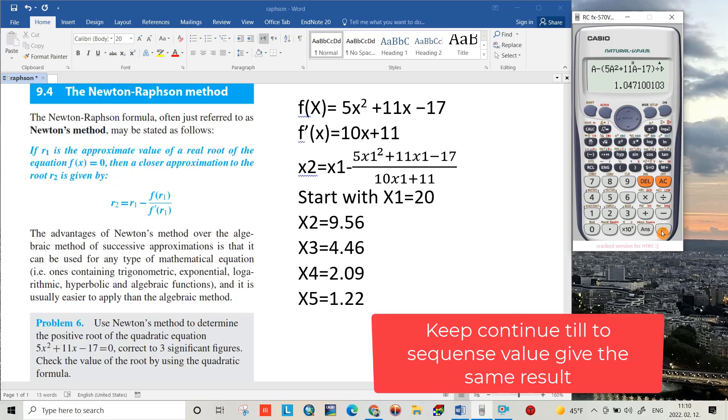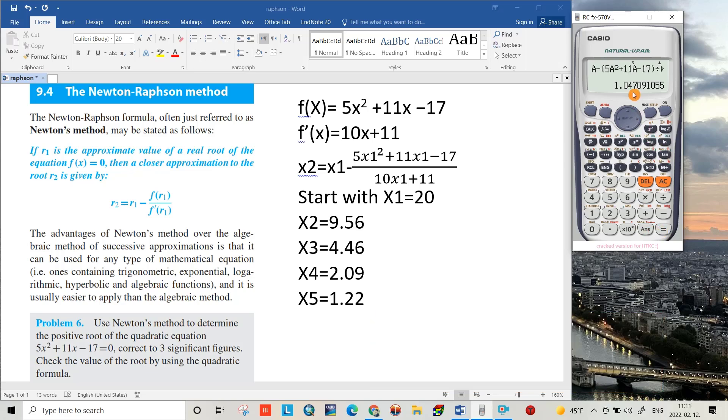This time also equal, answer 1.047. Equal, answer, equal, answer. We see there is a low difference, it means we are so close to the real value.